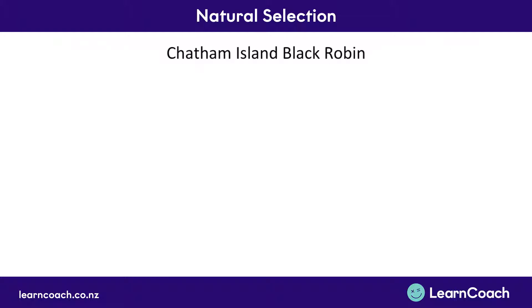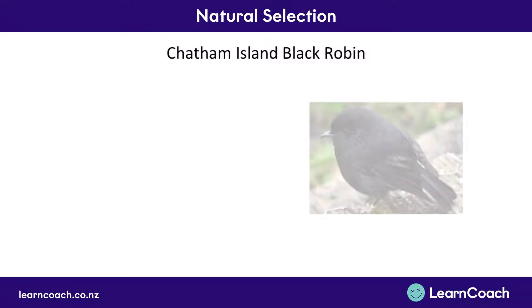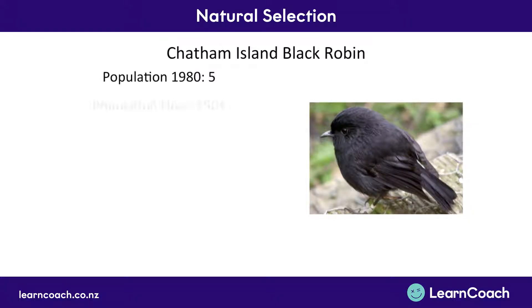Let's look at a New Zealand example, because you often need a New Zealand example in your NCEA exams. We're going to look at the Chatham Island black robin. It's quite an interesting species of bird because in 1980, around 25 years ago, there were only five of these birds that existed — their entire world population was five.